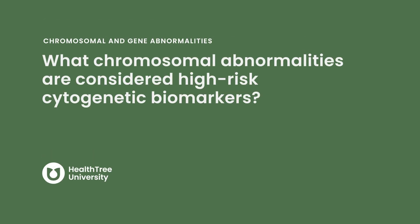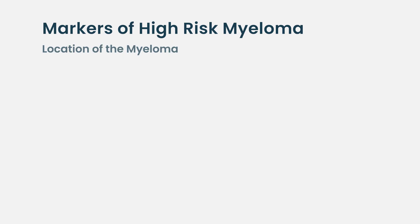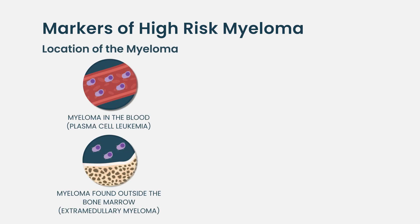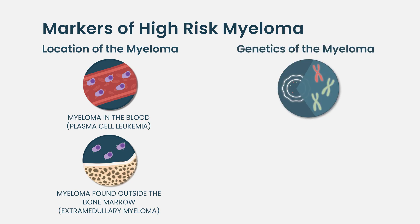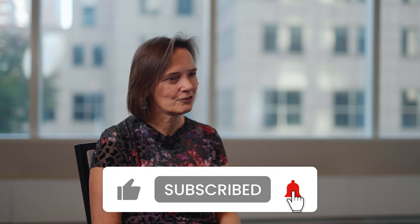What chromosomal abnormalities are considered high-risk cytogenetic biomarkers? We have many different ways of deciding whether patients are high-risk. This can include things like where the myeloma is, whether the myeloma is in the blood, whether it presents as extramedullary disease. We also have a way of defining high-risk by genetics — not the genetics of the whole patient, just the genetics of the myeloma cells. Recently, a group of international experts has been looking at the definition of high-risk and has refined it.